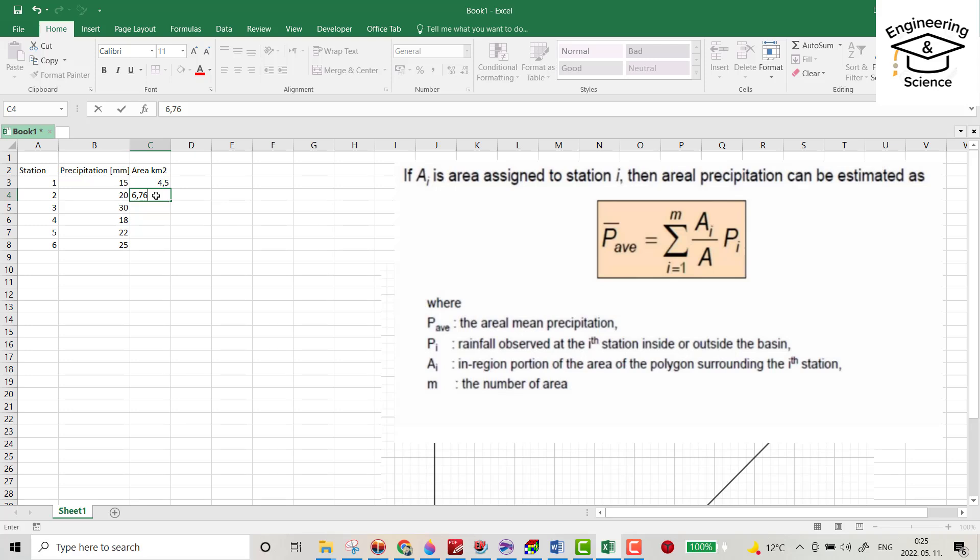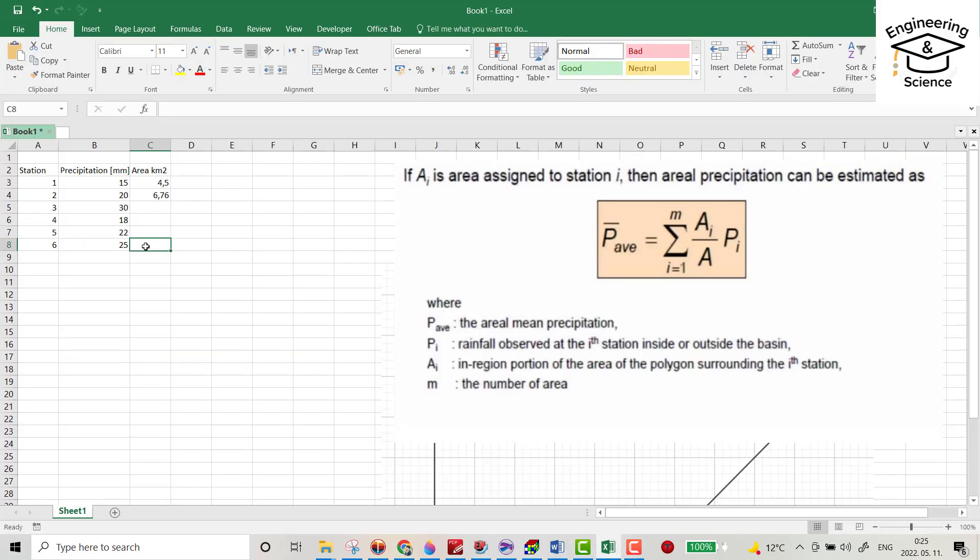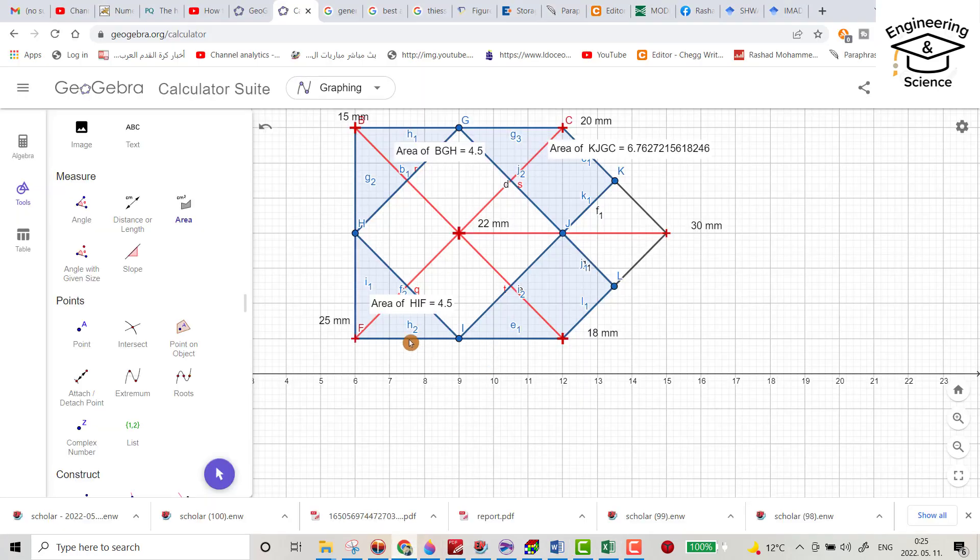For station 30 or station 25, this one is 4.5. Also station 18, just click it, 6.734.